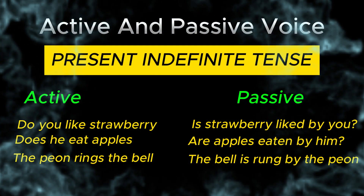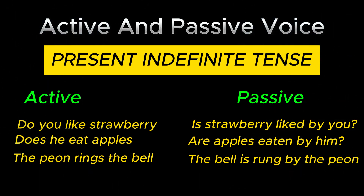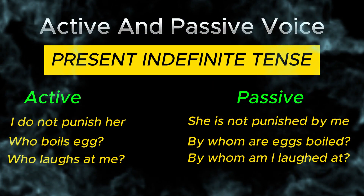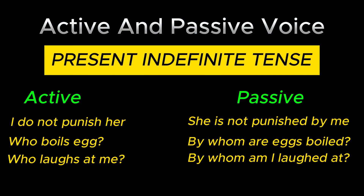Do you like strawberry? → Is strawberry liked by you? Does he eat apples? → Are apples eaten by him? The peon rings the bell. → The bell is rung by the peon. I do not punish her. → She is not punished by me. Who boils eggs? → By whom are eggs boiled? Who laughs at me? → By whom am I laughed at?